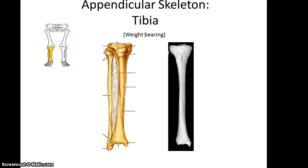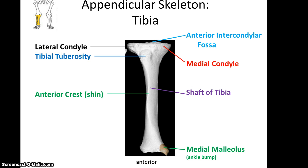The tibia is the weight-bearing bone of the lower leg. At the proximal end of the tibia, you have a lateral condyle and a medial condyle, and in between them is the anterior intercondylar fossa. These two condyles don't look as rounded as other condyles but are still considered condyles. A bit distal is the large tibial tuberosity, where the patellar ligament will attach. Then you have the long shaft of the tibia, and running along the shaft's anterior side is the anterior crest — essentially the shin, that edge you can feel on your lower leg.